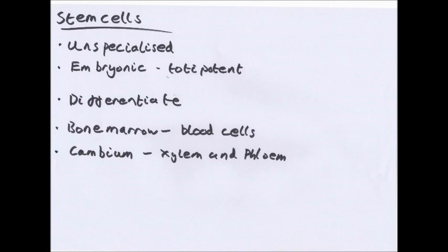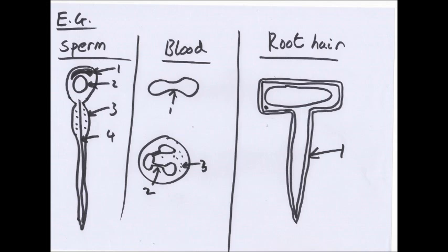Now cells can differentiate in a number of ways. We've changed to the number of particular organelles, the shape of the cell, some of the contents of the cell, and this is called specialization. For example, bone marrow cells will produce stem cells. You have cambium, which is in plants, and that will produce xylem and phloem, which you'll learn about later. And here are some examples.